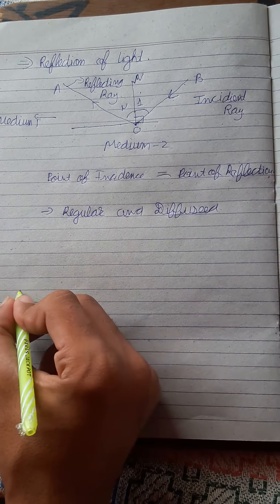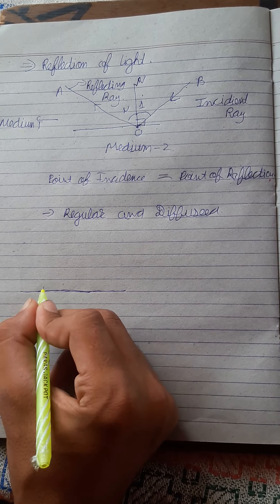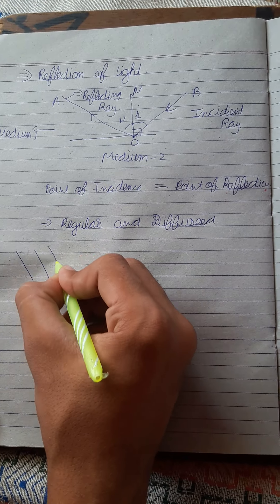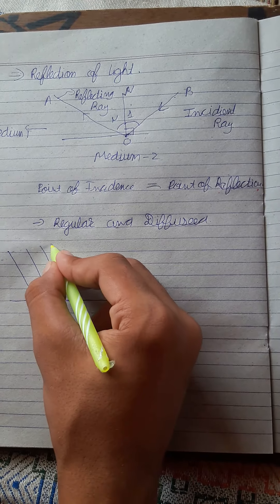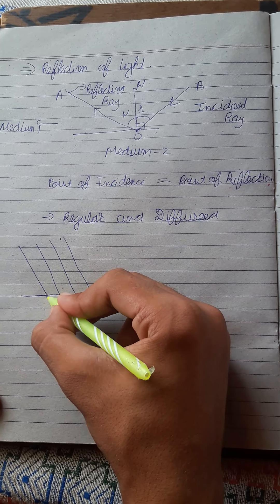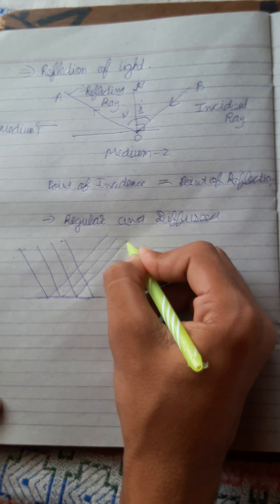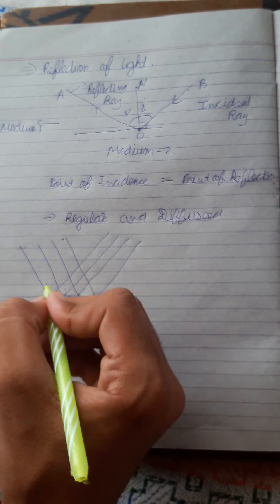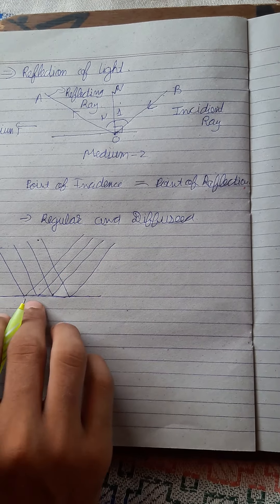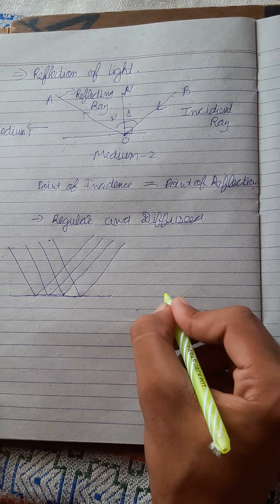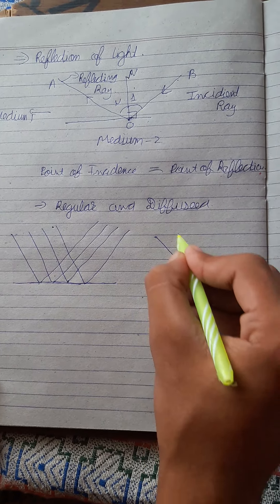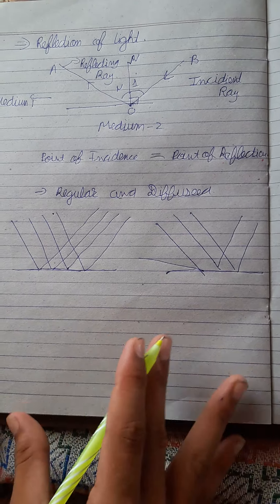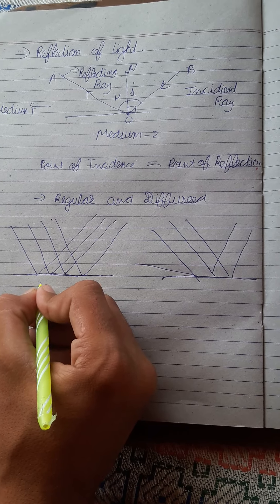Regular reflection occurs on a smooth surface. When a parallel beam of light comes in, it always reflects as a parallel beam — the reflected rays are parallel after reflection. In diffused reflection, a beam of light comes in but all rays go in random directions — they do not have a fixed path.